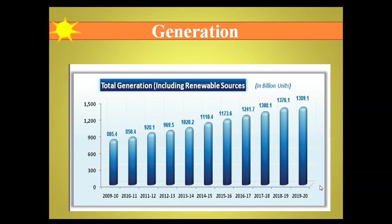In 2018–19 and 2019–20, the growth in generation was very low, almost around one percent, whereas growth had been continuously higher in earlier years. This concludes a brief introduction to the power sector — installed capacity and generation — and other aspects of the power sector will be covered in other videos.